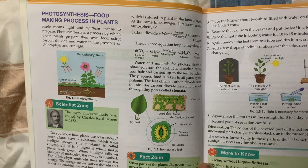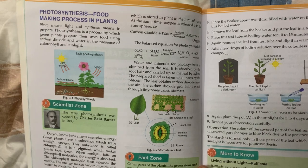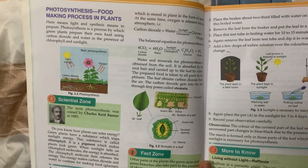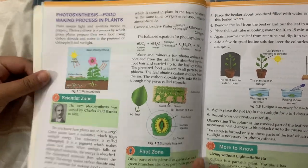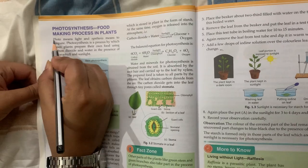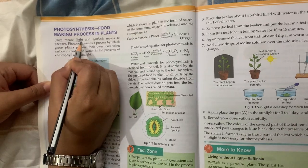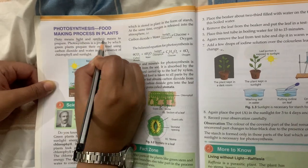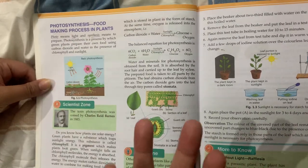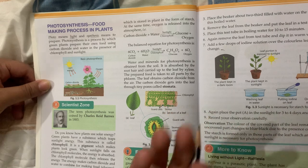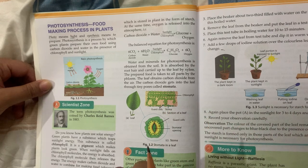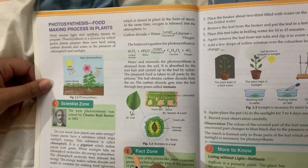It means the process of making food by plants is known as photosynthesis. 'Photo' means light, and 'synthesis' means making. So photosynthesis means making food in the presence of light.